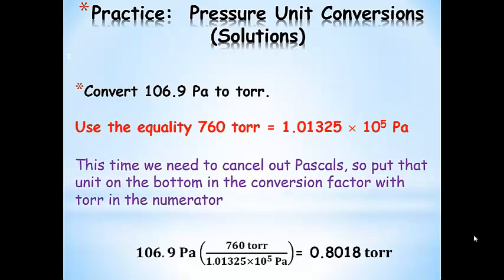For the last conversion, we're going to convert 106.9 pascals to torr. We use the relationship 760 torr equals 1.01325 times 10 to the fifth pascals. We need to cancel out pascals, so we put that on the bottom and 760 torr on top, and we end up with 0.8018 torr.